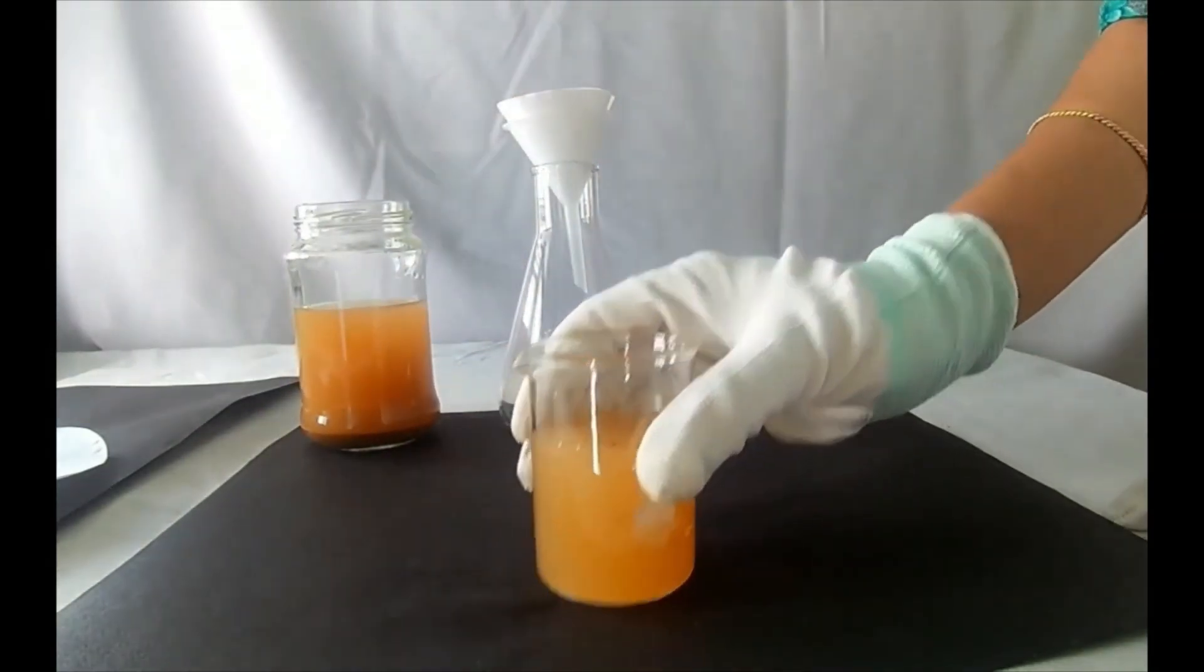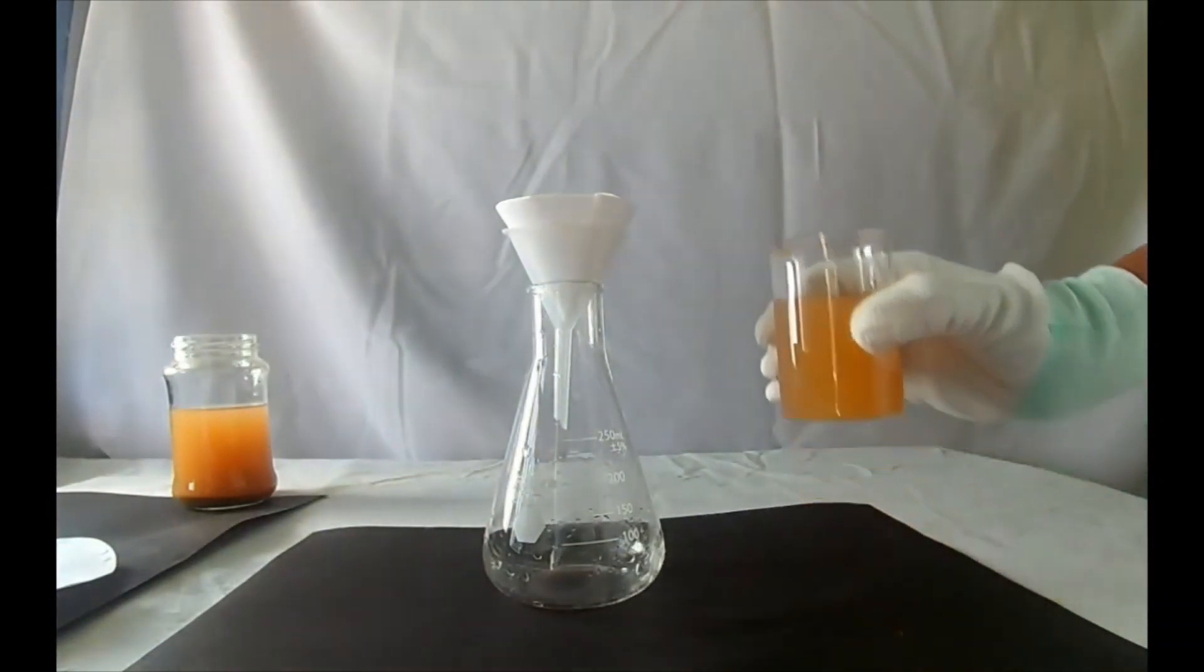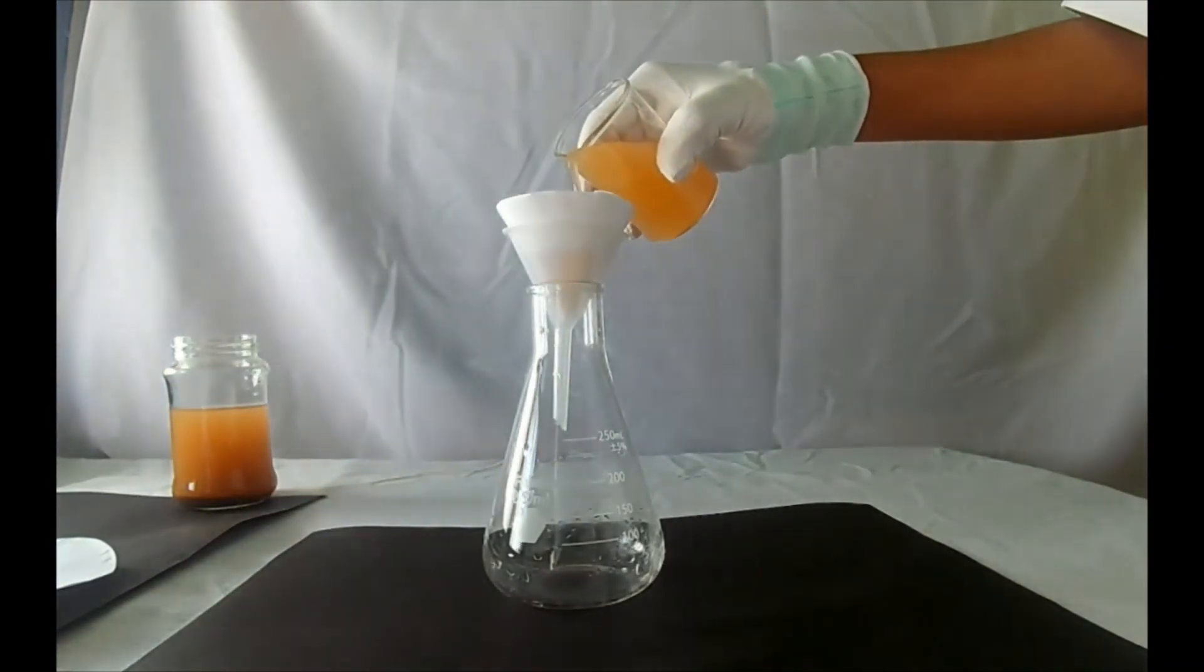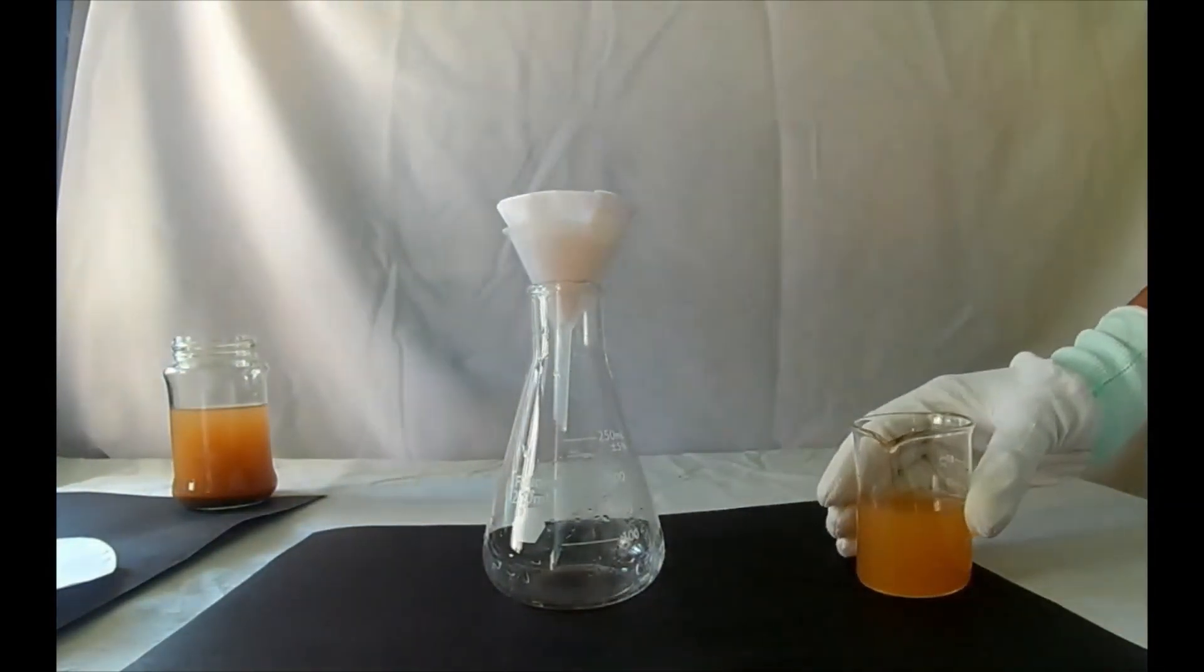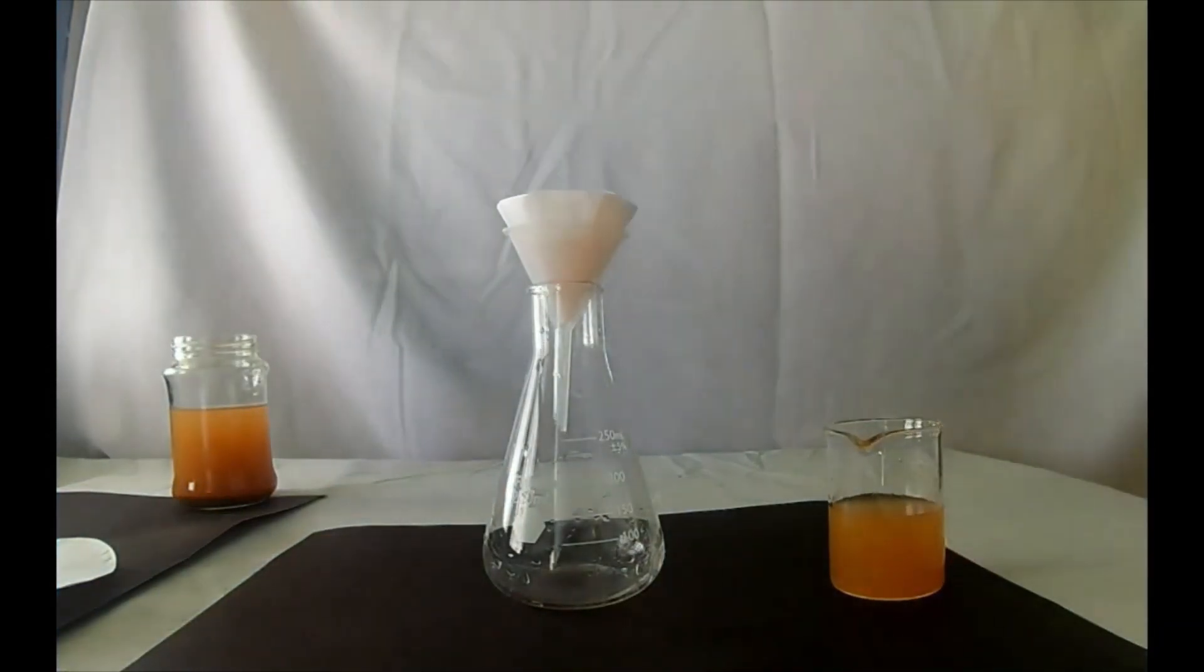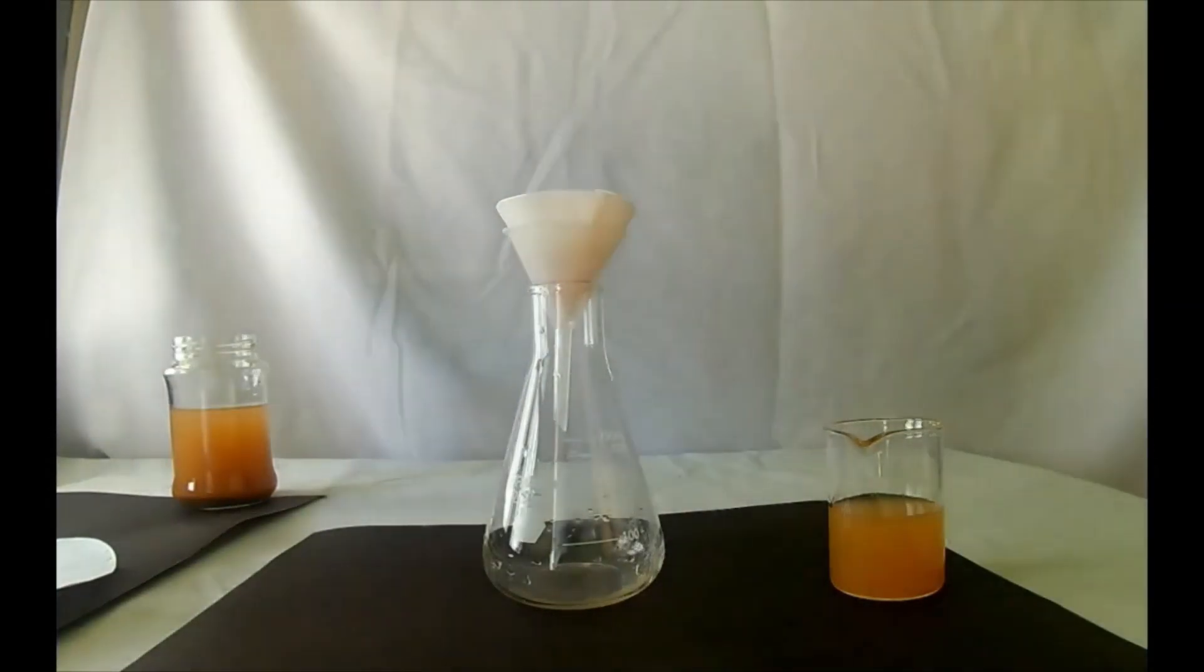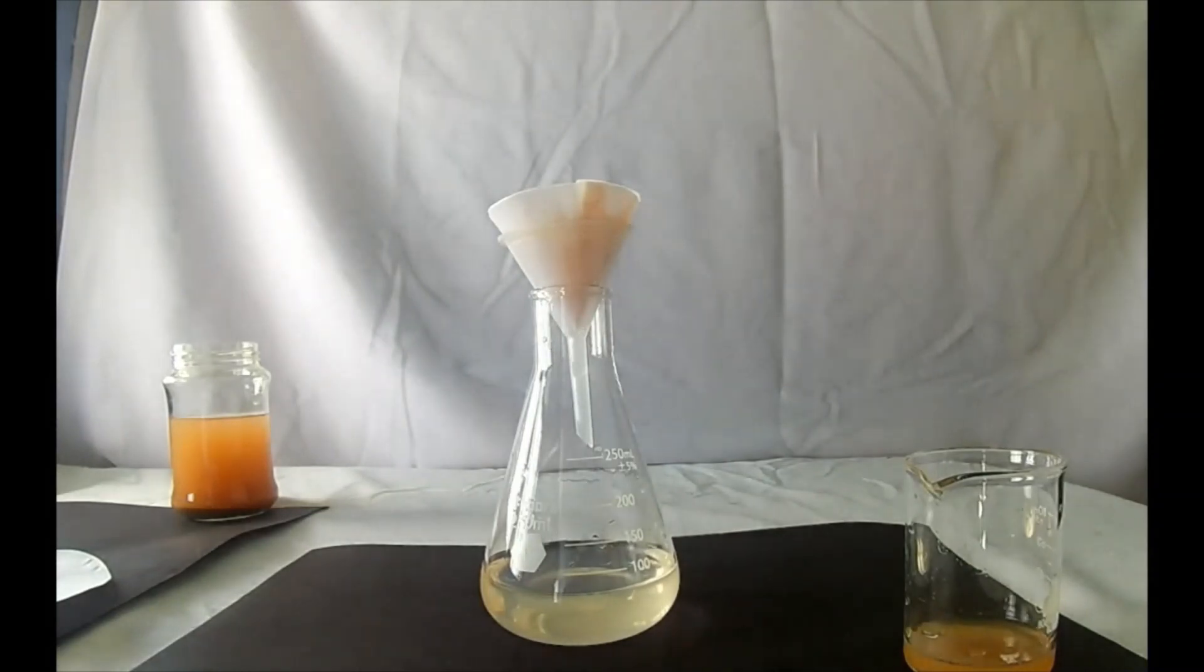Now take the decanted water and slowly pour it into the filter paper inside the funnel. Observe carefully. Water filters through the filter paper and is collected in the conical flask. This process is called filtration. Here the water is called the filtrate. The insoluble particle that remains in the filter paper is called the residue.